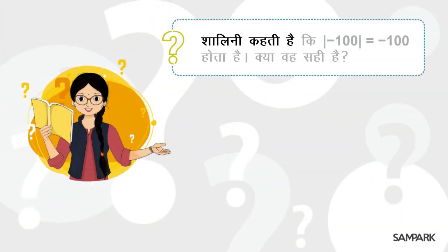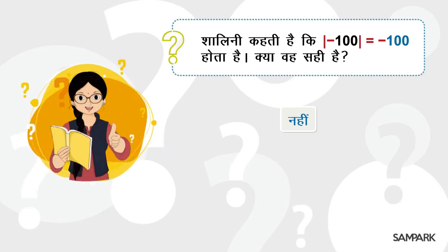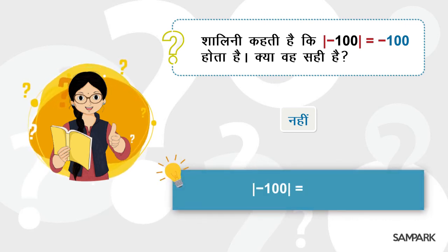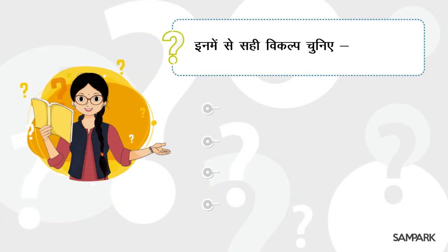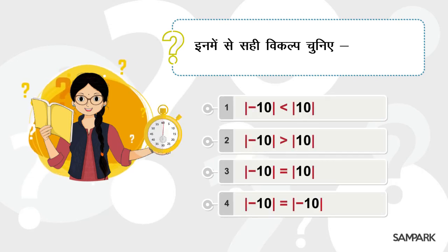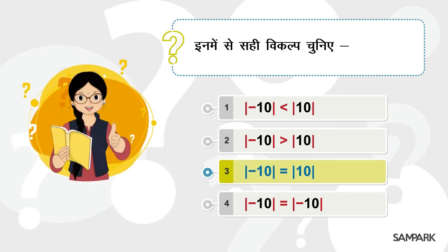शालिनी कहती है कि सौ का निर्पेक्ष मान माइनस सौ होता है — क्या वो सही है? नहीं। सौ का निर्पेक्ष मान यानी जीरो और सौ के बीच दूरी, जो कि सौ है। तो सौ का निर्पेक्ष मान सौ है। दोनों माइनस दस और दस का निर्पेक्ष मान दस ही होता है, तो सही उत्तर है विकल्प तीन।